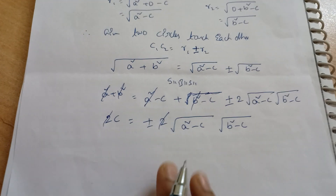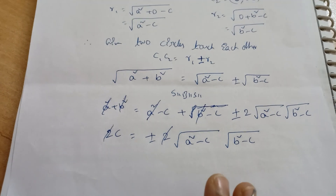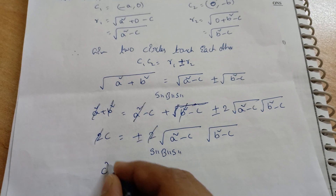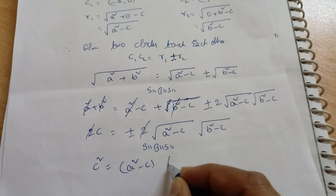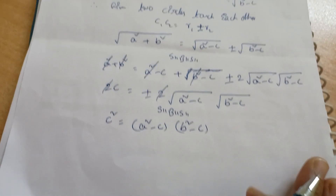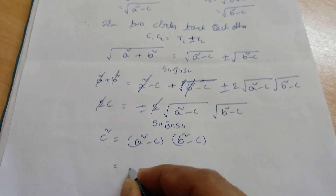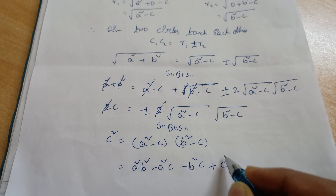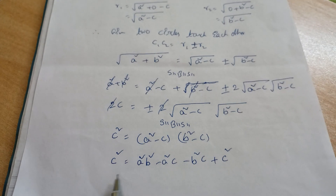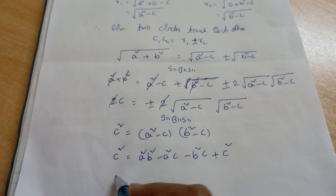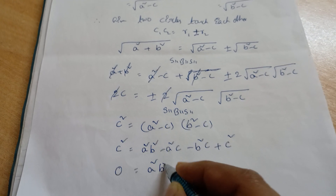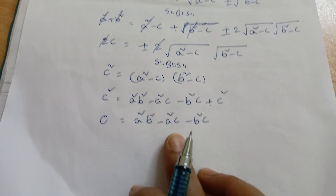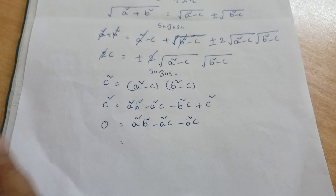After the twos cancel, we have c = ±√(a²−c)·√(b²−c). Since square roots remain, we square both sides again: c² = (a²−c)(b²−c). Expanding the right side: a²b² − a²c − b²c + c². The c² appears on both sides and cancels, giving: 0 = a²b² − a²c − b²c.